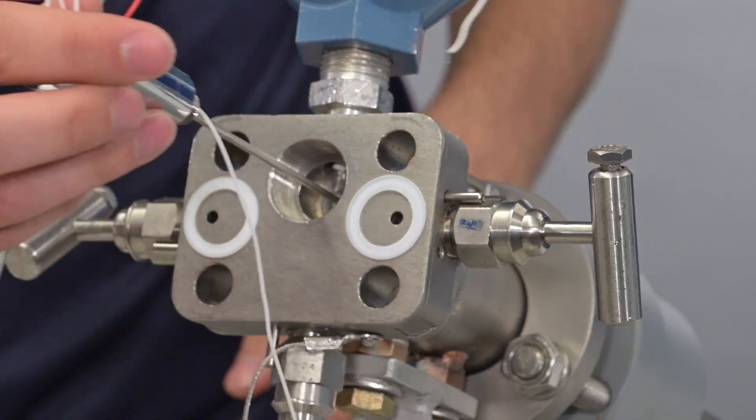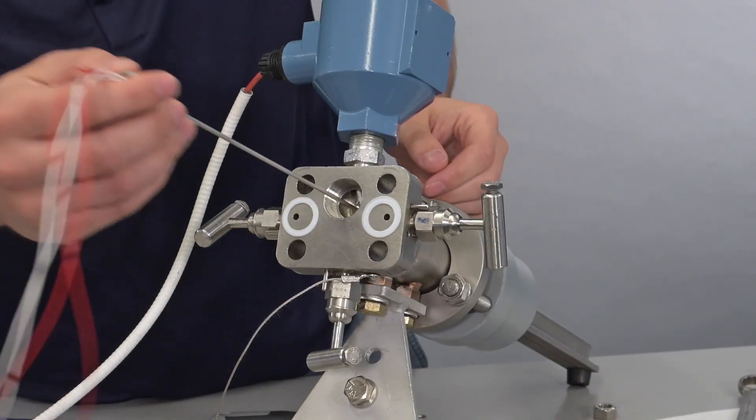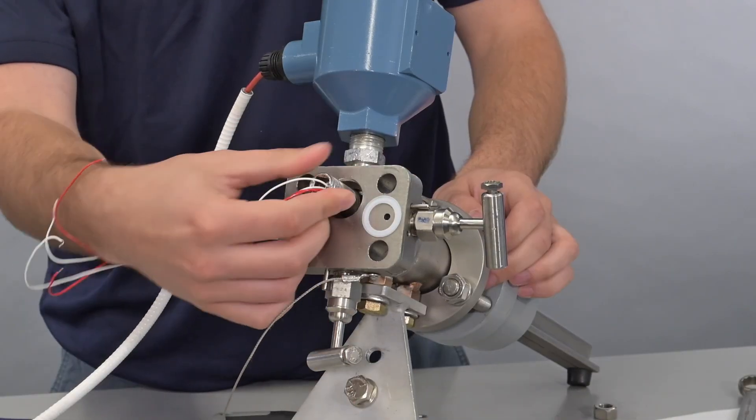Now that the old RTD has been removed, it is time to install a new unit. Reinstall the RTD and hand tighten the hex nut using the socket.